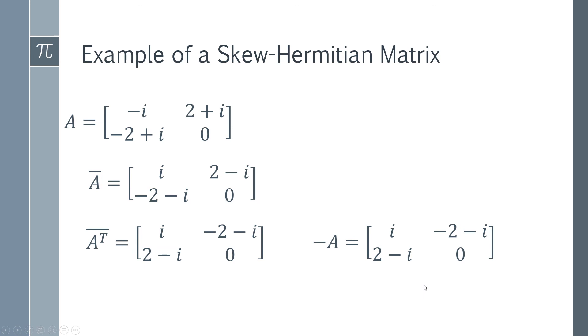Every element in the conjugate transpose equals every element in -A. Therefore, A̅ᵀ = -A, proving that A is a skew-Hermitian matrix. That's how you prove a matrix is skew-Hermitian.